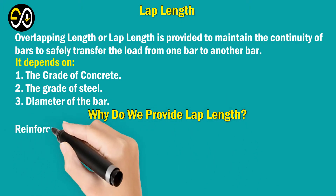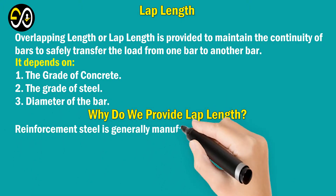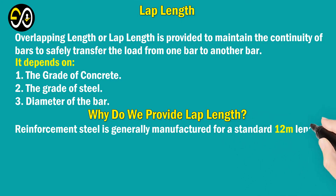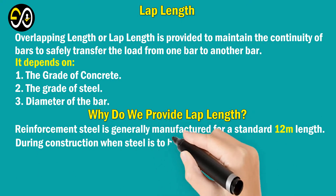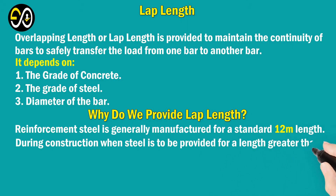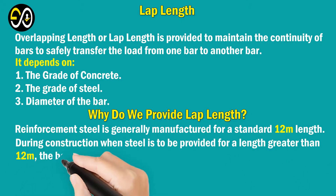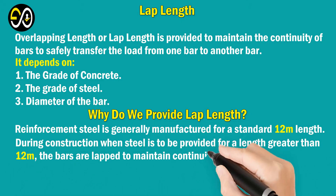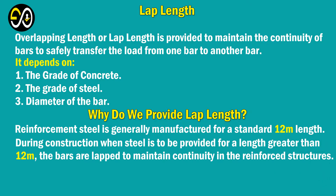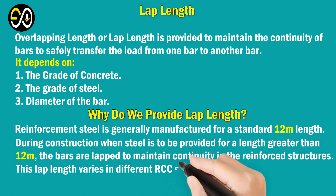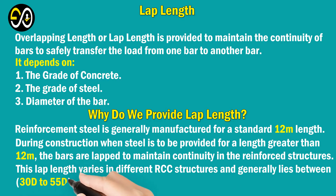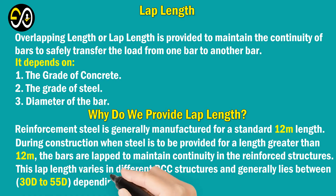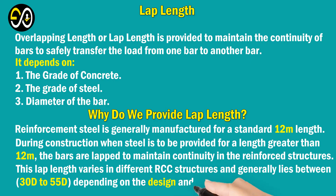Why do we provide lap length? Reinforcement steel is generally manufactured in a standard length of 12 meters. During construction, when steel is to be provided for a length greater than 12 meters, the bars are lapped to maintain continuity in the reinforced structure. This lap length varies in different RCC structures and generally lies between 30 times to 55 times the diameter, depending on the design and grade.